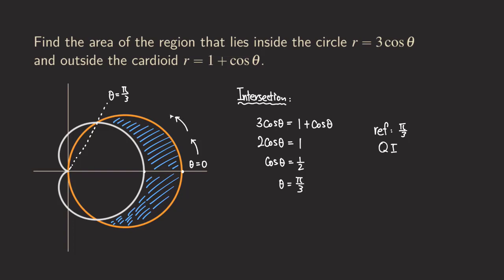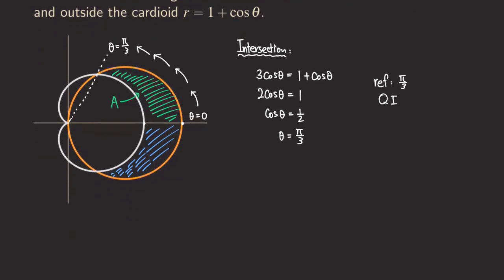We are going to integrate from theta equals 0 to pi over three, and that covers this top region. To find the other side, we just double the area for the top region. We'll call this top region A, so our goal is to find A, then double it to get the full shaded region area.